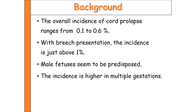The incidence of cord prolapse ranges from 0.1 to 0.6 percent, but in breech presentation the incidence is higher, up to one percent. It is more common in male babies and the incidence is higher in cases of multiple gestations.